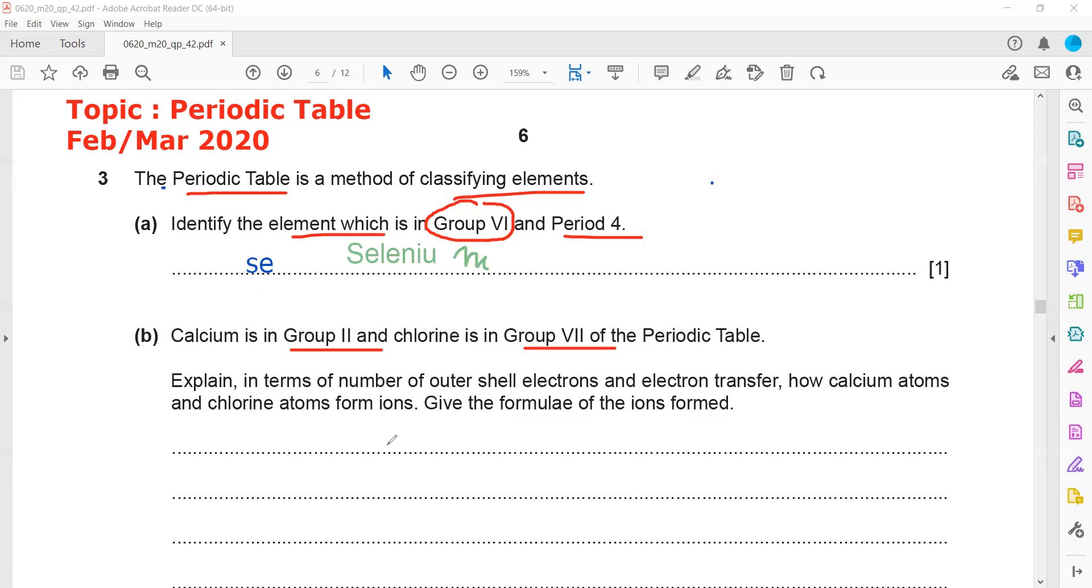Basically, when calcium is combining with chlorine, calcium belongs to group 2 so it will have, first explain in terms of outer shell electron. How many outer shell electrons will be there for calcium? Calcium will have 2 outer shell electrons and chlorine belongs to group 7 so it will have 7 outer shell electrons.